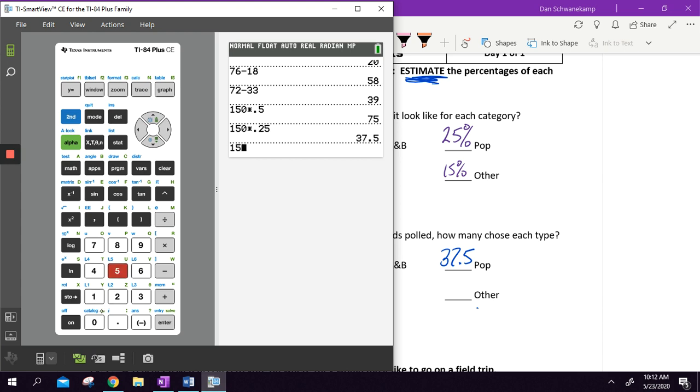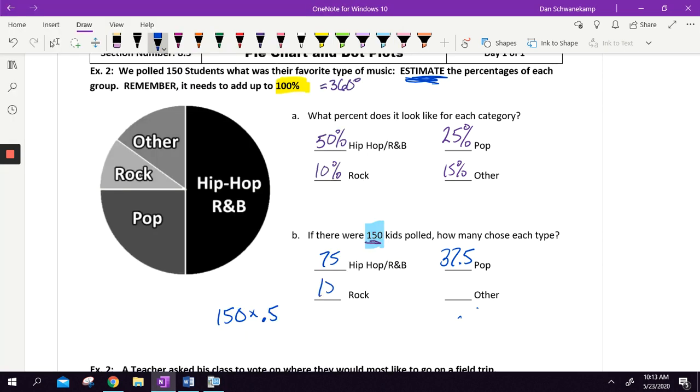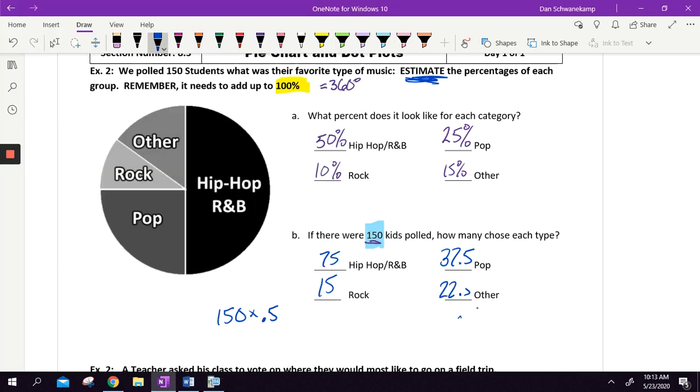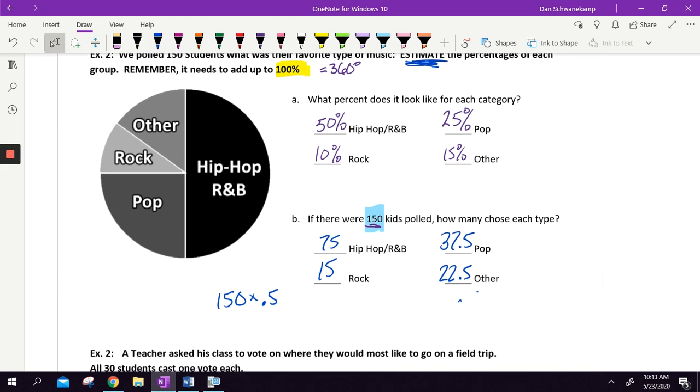Rock, we're going to take 150 times 0.1 because that's 10%, and I get 15 people for rock. And so what's that going to leave me for my other? 0.15 times 150, I get 22.5. If I were to clean up that half a person, maybe I would say there were 37 pop and 23 other. But that's the right idea.